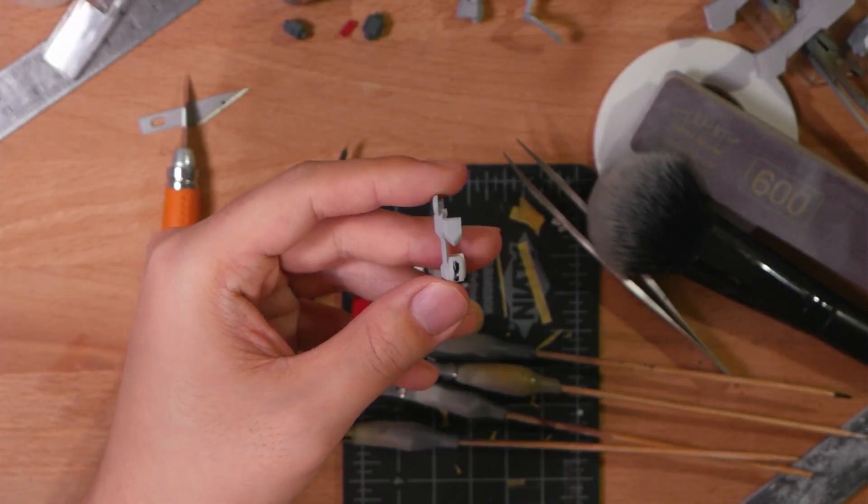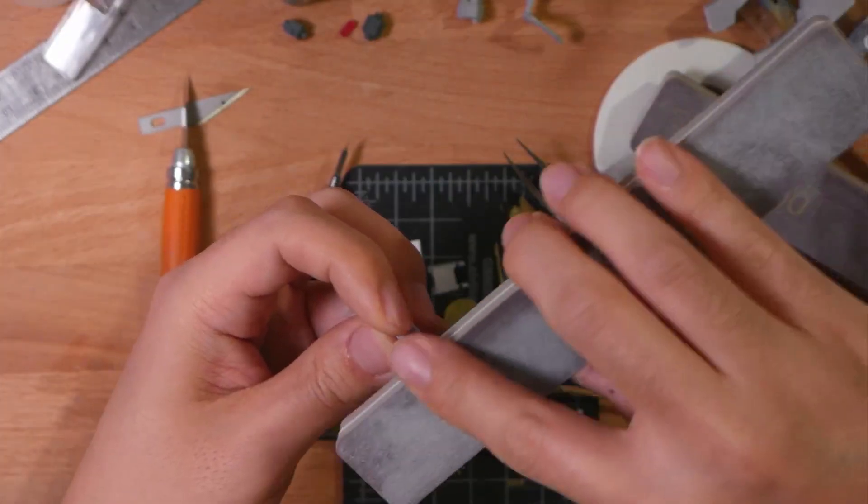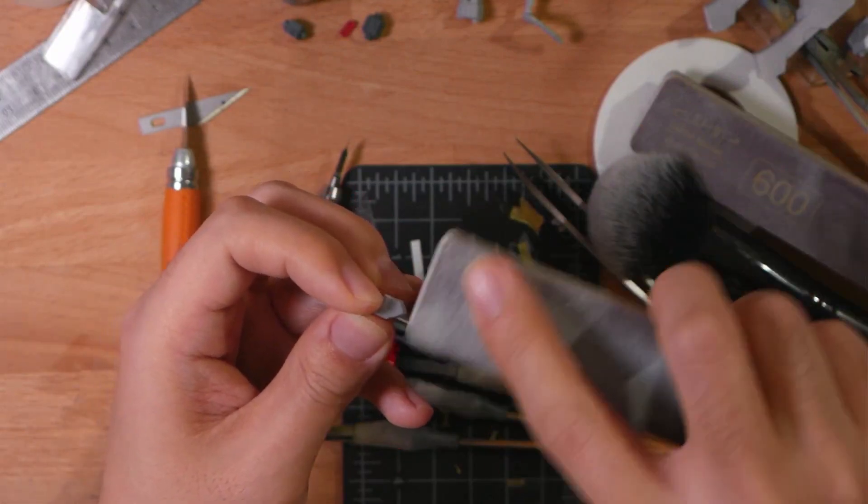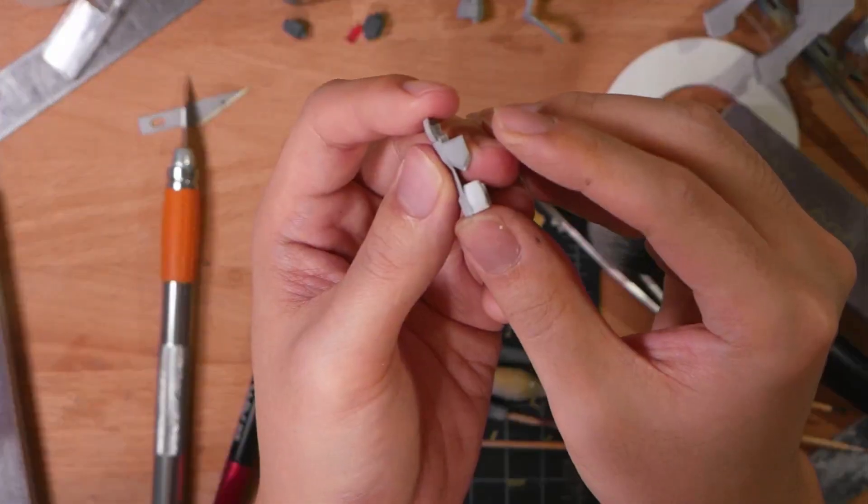After priming, I see a little bit of split still in the middle, so I put on a bit of black super glue and sand that off to get a smooth surface.